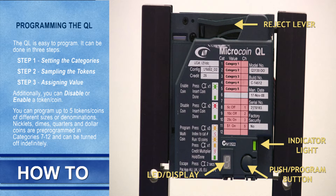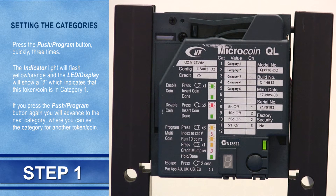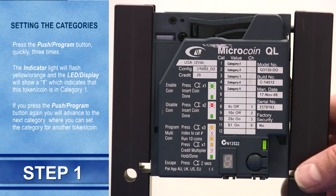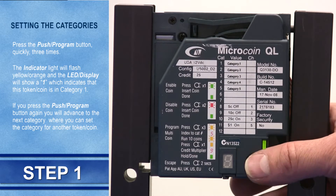You will also learn how to enable or disable a token. Let's get started. Step 1: Setting the categories.